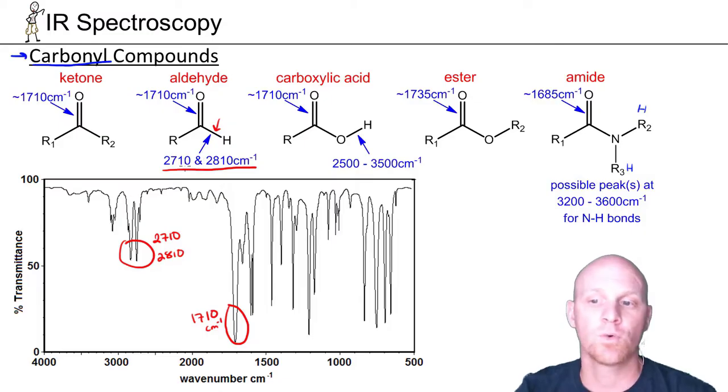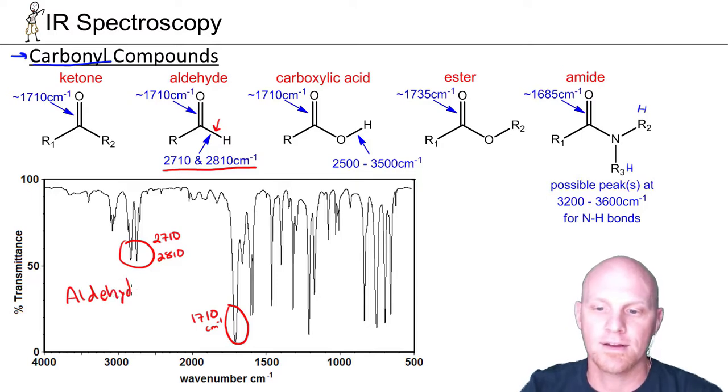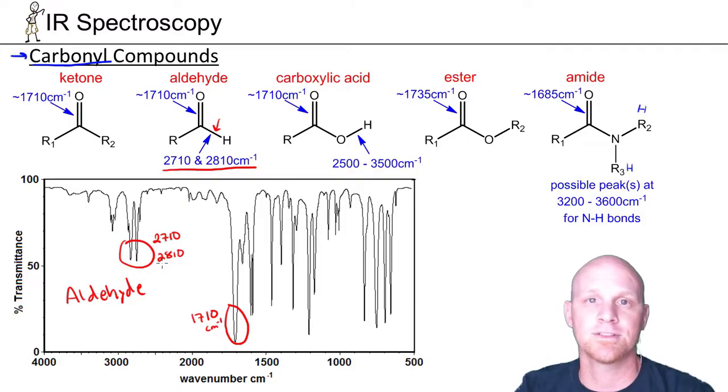It gets two peaks, 2710 and 2810. So this combination is a dead giveaway we have an aldehyde. In this case, not a ketone, not a carboxylic acid, not an ester, not an amide. Let's take this further and see the other nuances that help us distinguish between the other carbonyl-containing compounds.